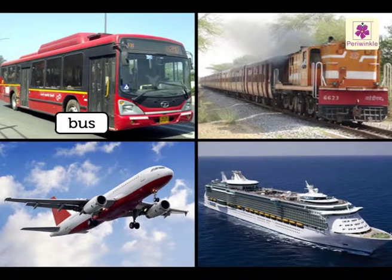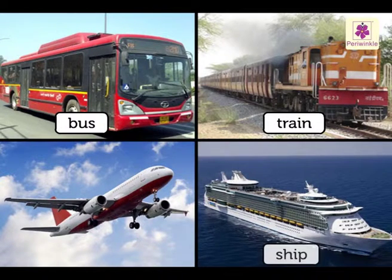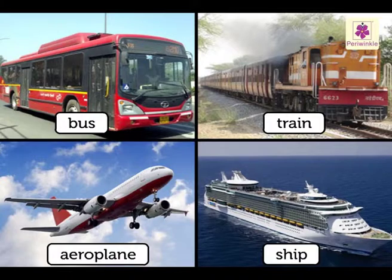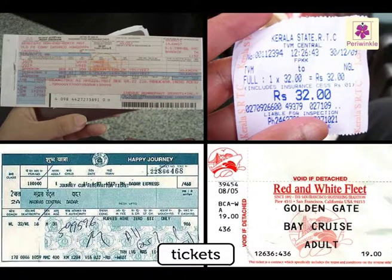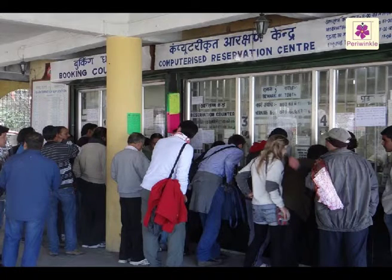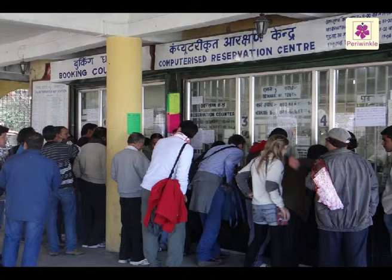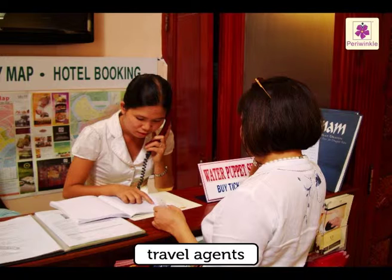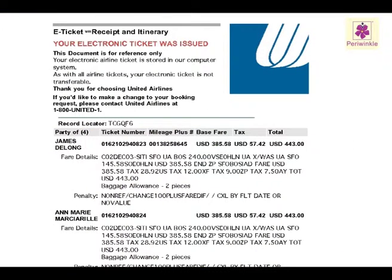To travel by bus, train, ship or aeroplane, we require tickets. We can book tickets in advance at the station or buy them from a travel agent. Travel agents charge a fee to book the tickets. Nowadays, we can buy e-tickets through the internet on our computers.